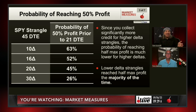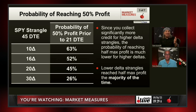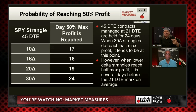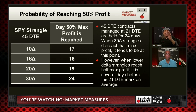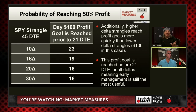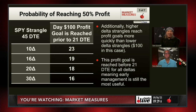This is descending because it shows the probability of reaching 50% max profit prior to 21 days. The lower delta options, you're going to reach it faster. The high delta options, you're not. But when you flip to the next slide, it makes sense because it compares the same distribution — but then it flips everything over, because the lowest delta options have less premium to start with, so it's hard to get to a dollar. The profit goal is reached before 21 DTE for all deltas, meaning early management is still the most useful. It's very important to manage early. All our takeaways are always about managing early.